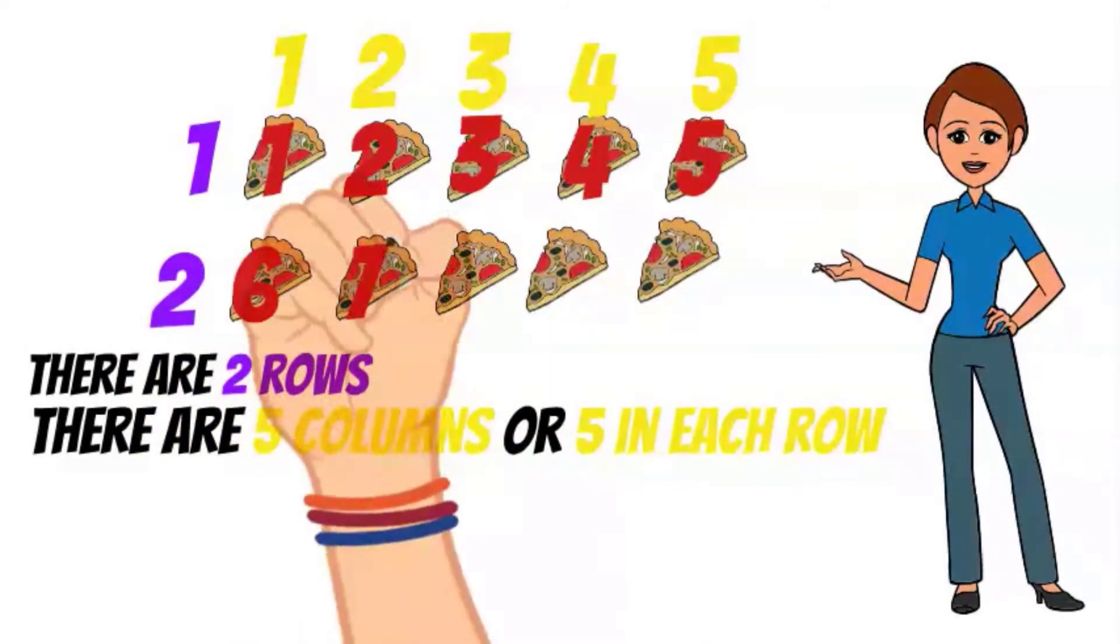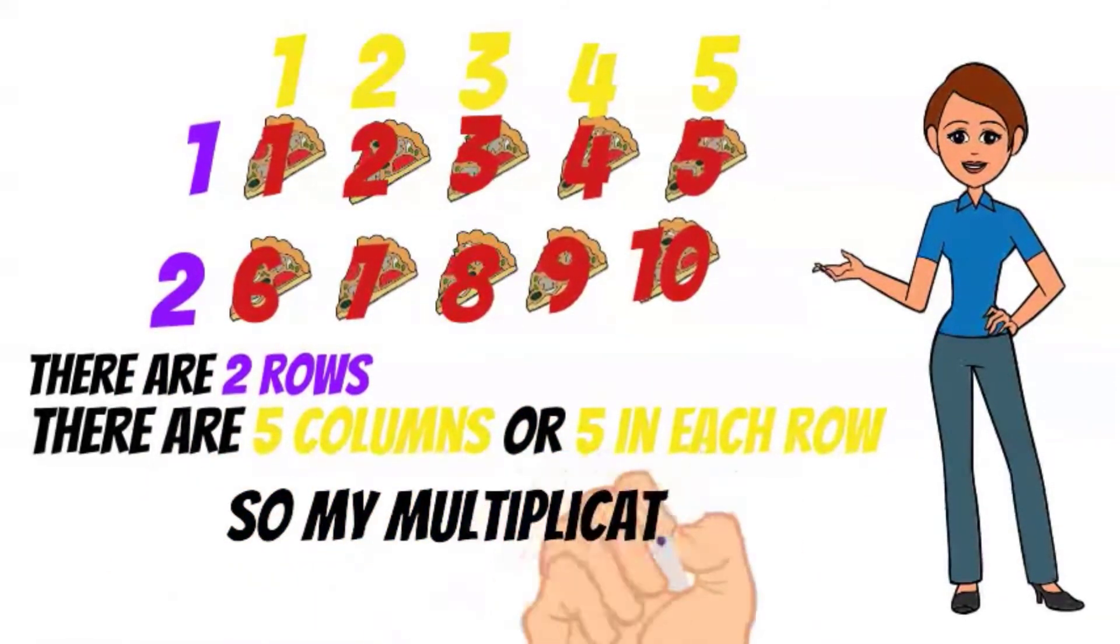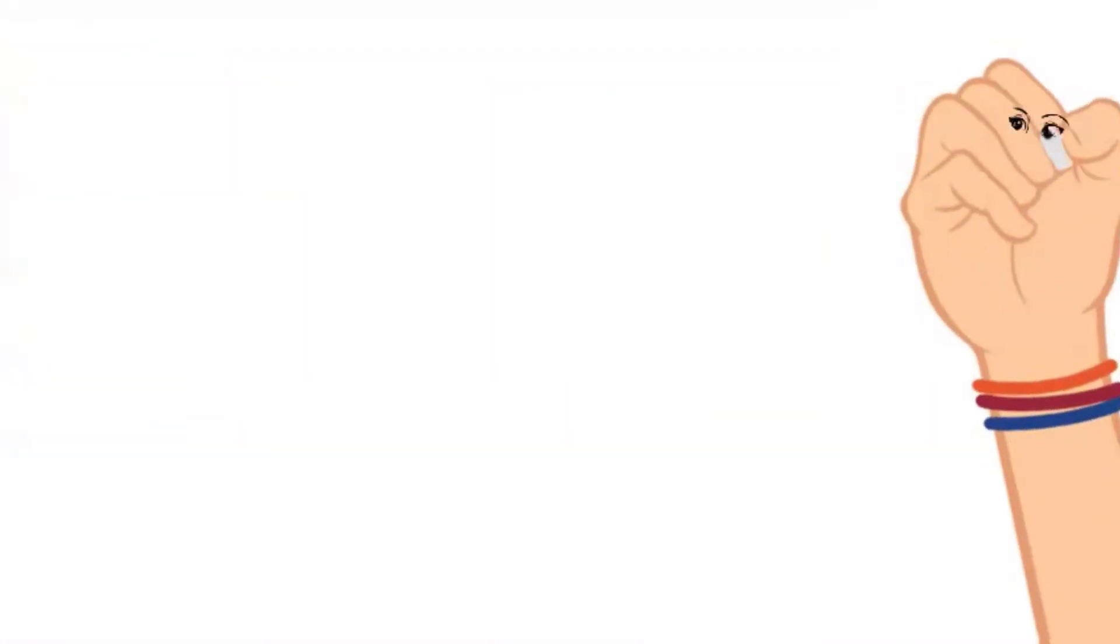When I count them all, I have a total of ten. So the multiplication equation is two times five equals ten.